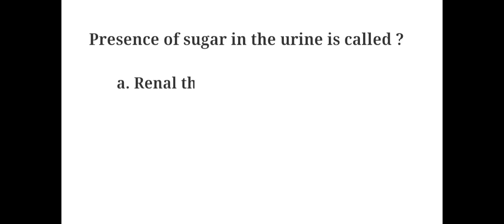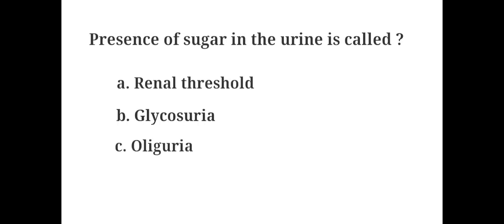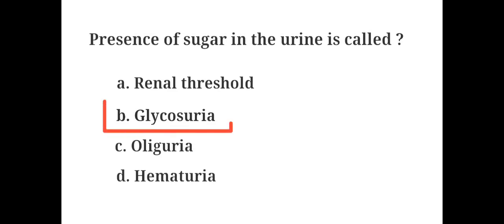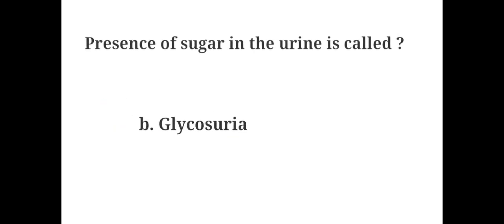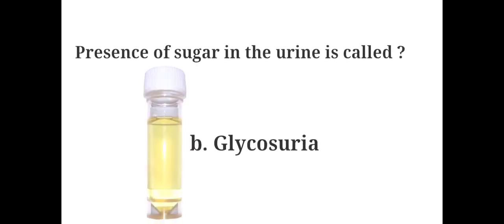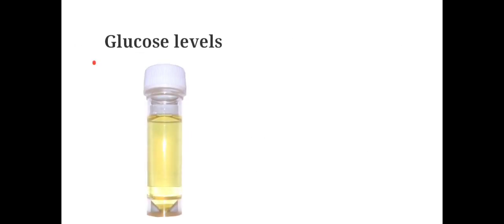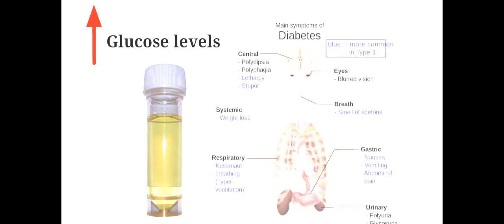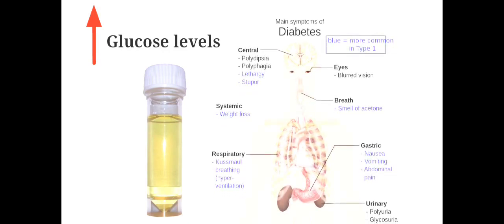Presence of sugar in the urine is called: A. Renal threshold, B. Glycosuria, C. Oliguria, D. Hematuria. The answer is B. Glycosuria. The presence of increased sugar levels in urine is commonly seen in untreated diabetes mellitus.